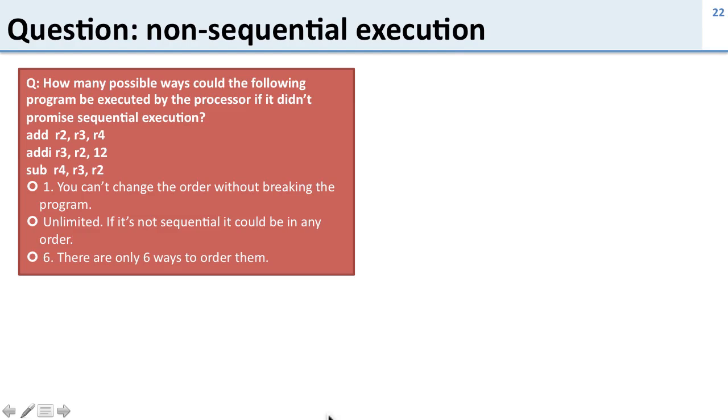So a question about this: How many possible ways could the following program be executed by the processor if it didn't promise sequential execution?